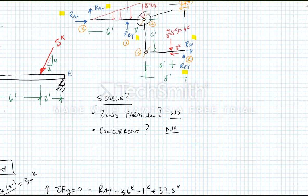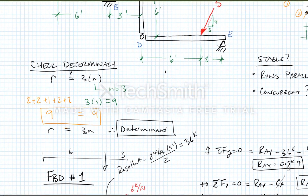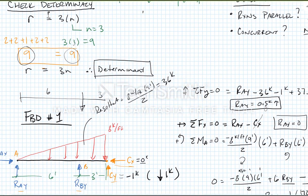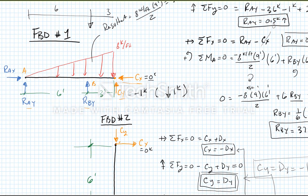We wanted to see if we can actually solve this problem. So we checked stability. Our reactions are not all parallel and they don't all converge at one point. So we've checked this case of stability. And we checked determinacy. We had nine unknowns, we had three members times three, nine equations of equilibrium. So we concluded it was determinant.